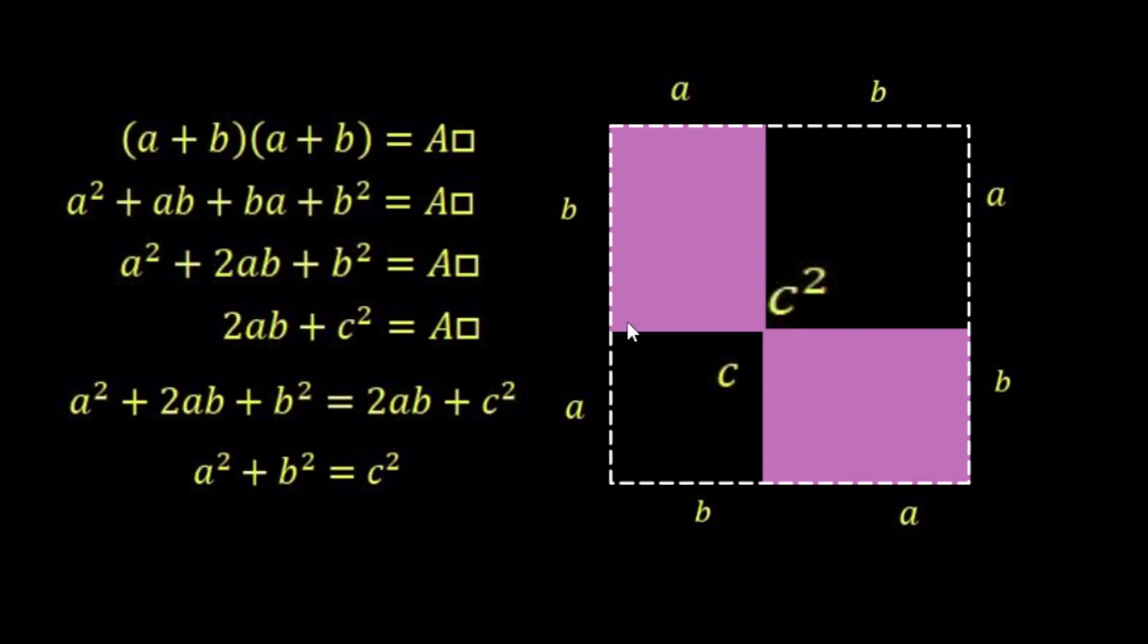But we've said that the black area, although it's changed shape, is still the same value which is c². So we've got here c² is equal to a² + b².